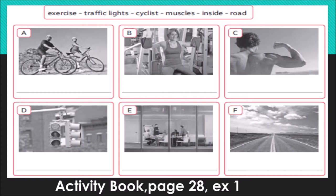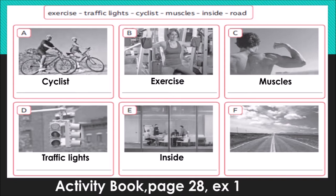The answers are: A — cyclist; B — exercise; C — muscles; D — traffic lights; E — inside; F — road. I invite you to try to pronounce these words in order to improve your pronunciation and oral production. Traten de pronunciar para que vayan asimilando estas palabras y guardándolas en la memoria, y también interesándose por aprender la pronunciación, y eso les va a dar seguridad y más interés por el idioma. Cyclist, exercise, muscles, traffic lights, inside, road. It's a very simple activity.